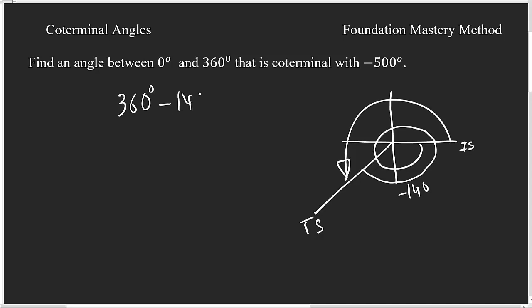The coterminal angle is 360 degrees minus 140 degrees, which gives you 220 degrees — and that is between 0 and 360. In general, identify your initial side and terminal side. When looking for a coterminal angle, start from the initial side and go in the positive direction. If no restriction is mentioned, the angle on the other side is also coterminal.